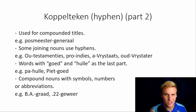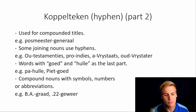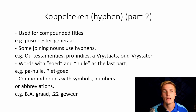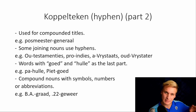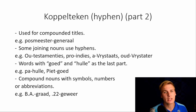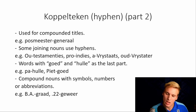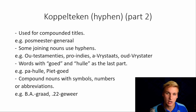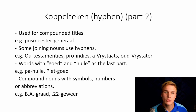The koppelteken, Part 2. It is used for compounded titles. For example: Bosmeester-Generaal, or Postmaster-General. Some joining nouns use hyphens. For example: Oud-Testamenties, Pro-Indies, A-Frystaats, and Oud-Frystaater. Oud-Testamenties refers to something being Old Testament-like; Pro-Indies means pro-Indian; A-Frystaater means not to do with the Free State; Oud-Frystaater means someone who came from the Free State. Words with goed and hulle as the last part — for example: baashulle and pitgoed. When you put it on paper, just remember the hyphen.